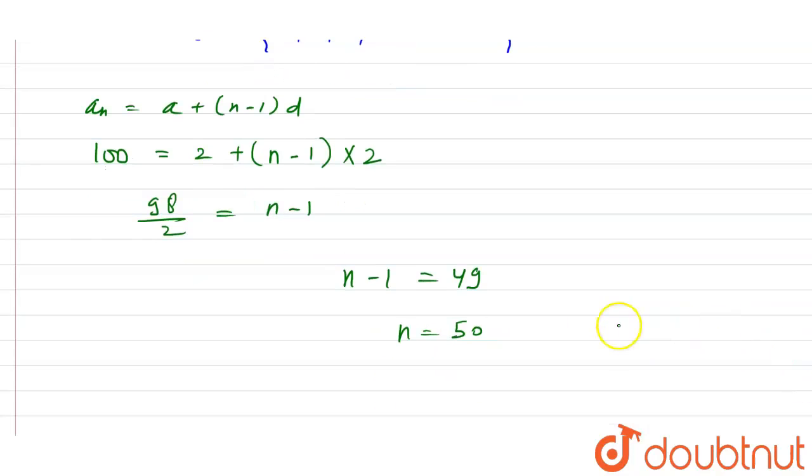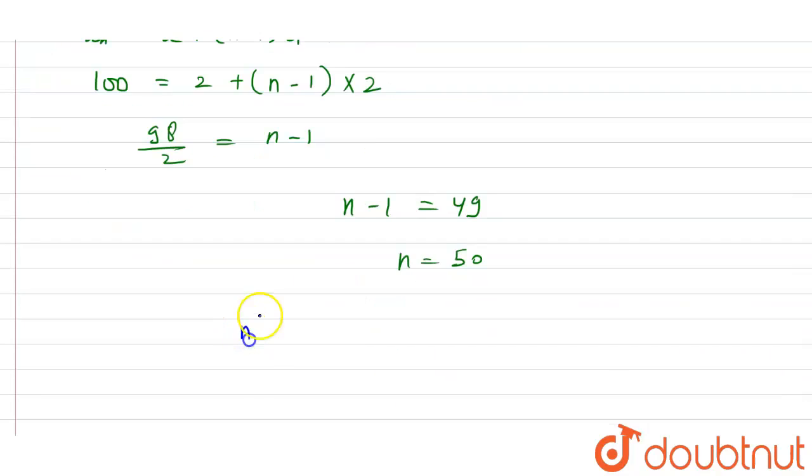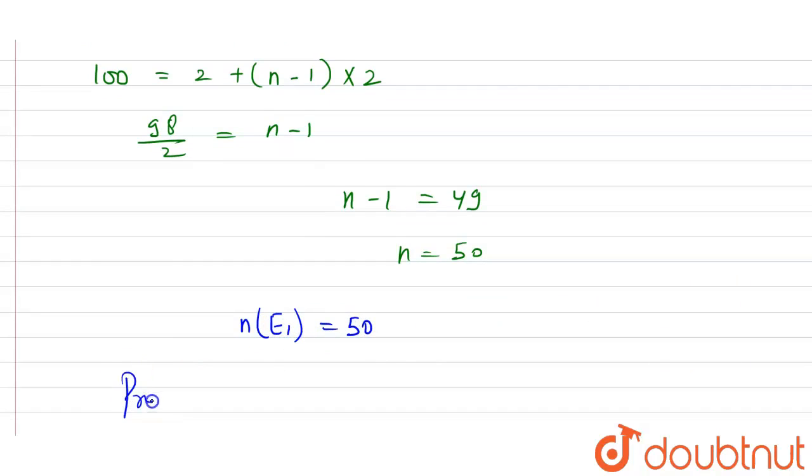So number of even numbers is 50. So n(E₁) is equals to 50. So our probability is equals to total favorable outcomes divided by total possible outcomes.